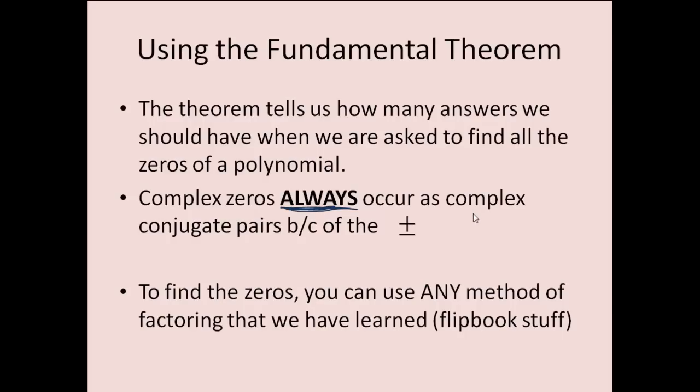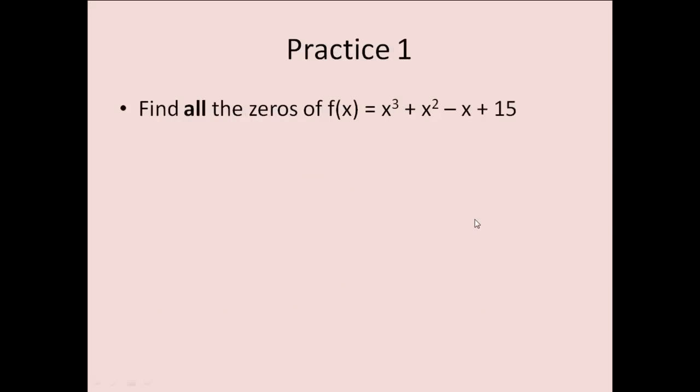Now, when we are actually asked to find the zeros, you can use any method of factoring that we have learned, basically anything that's in your flip book. So here's our first practice: Find all the zeros of x^3 + x^2 - x + 15. Before I even get started, I want to find my degree, which is 3, so I know that when I'm done, I had better have 3 different answers.